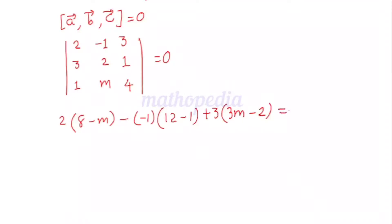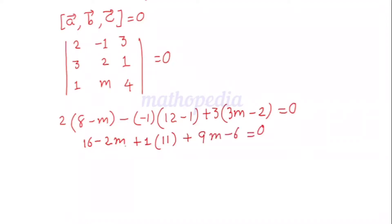Set equal to zero and simplify: 2×(8 − m) = 16 − 2m. Then −(−1)×(12 − 1) = +1×11 = 11. Then 3×(3m − 2) = 9m − 6. Combining: 16 − 2m + 11 + 9m − 6 = 0, which gives 7m.